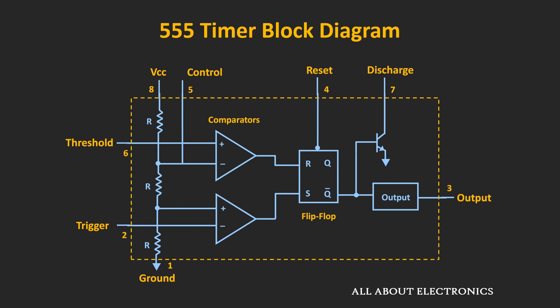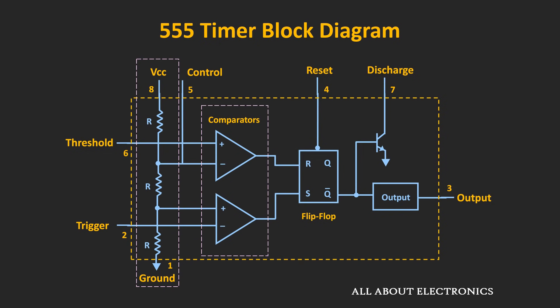If you see this block diagram, many blocks or components are used in this 555 timer. The first one is the voltage divider circuit. Then the next block is the comparator, and the output of the comparator goes to the flip-flop circuit. The flip-flop is the third block. Then there is a discharge circuit for the discharging purpose, and the last block is the output driver circuit. These are the basic blocks of this 555 timer IC, and one by one we will see the function of each block.